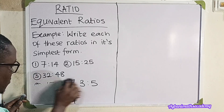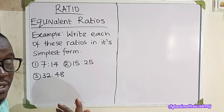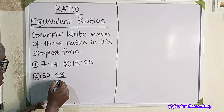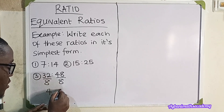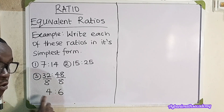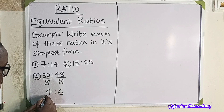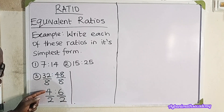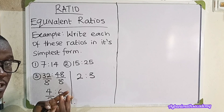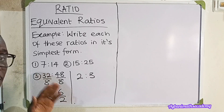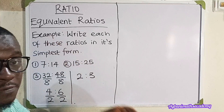Now let's look at the final one: 32 is to 48. What number can divide both 32 and 48 without a remainder? Let's go with 8. 32 divided by 8 is 4, and 48 divided by 8 is 6. But is 4 is to 6 the lowest form? Yes — 2 can divide both. So we divide both by 2: 4 divided by 2 is 2, and 6 divided by 2 is 3. There is no number that can divide both 2 and 3, so 32 is to 48 in its simplest form is 2 is to 3. Now I'm going to write down the assignment for this section.